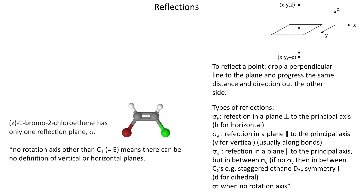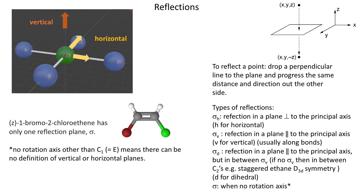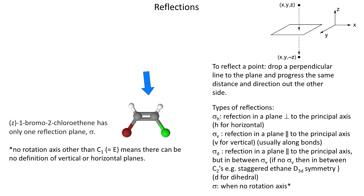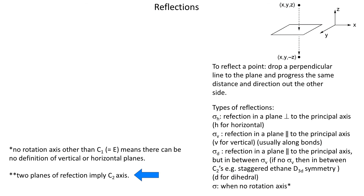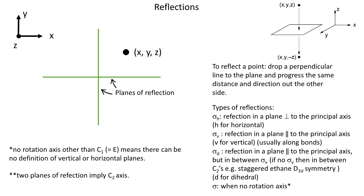The last type of reflection is just sigma — when the molecule doesn't have a principal axis, we can't define terms vertical and horizontal, since these are always defined with respect to the principal axis, so in that case sigma has no subscript. Two planes of reflection imply an axis of rotation — you can prove this by taking a point with generic coordinates x, y, and z and performing the reflections, then noticing what the result equals. When all axes are of the same order, you need to pick one as the principal axis and name the sigmas accordingly.